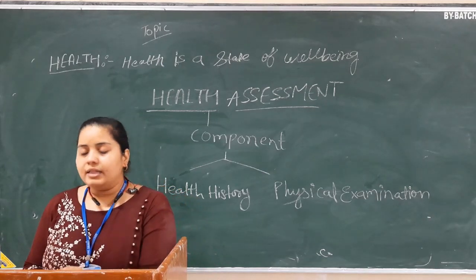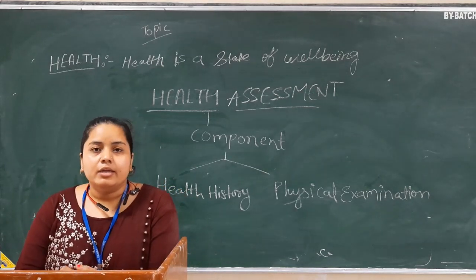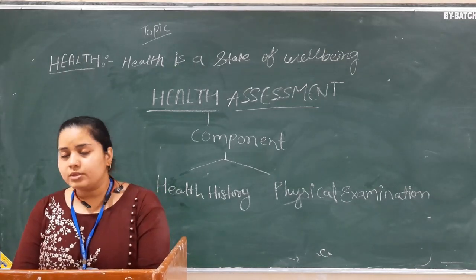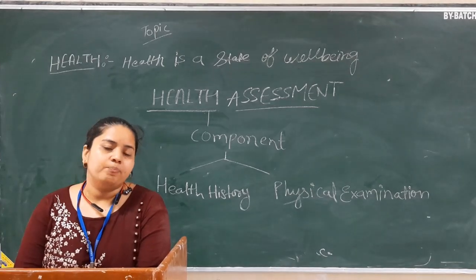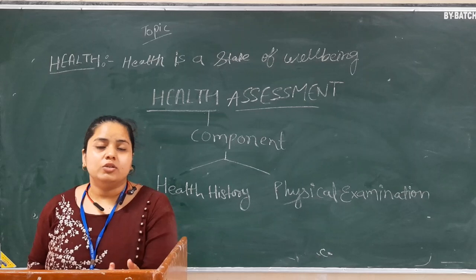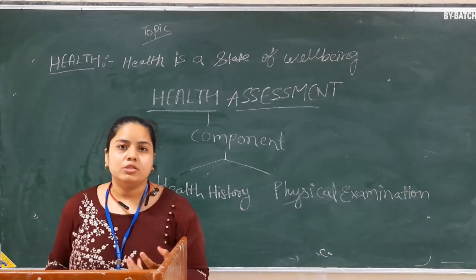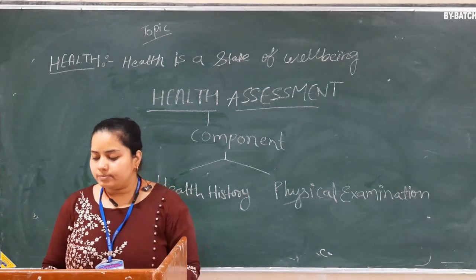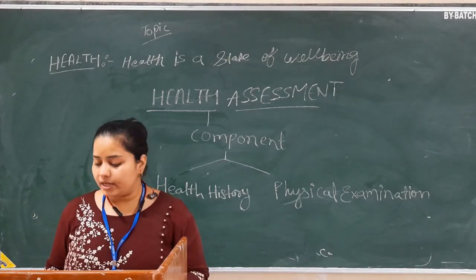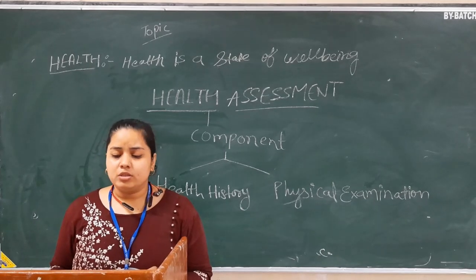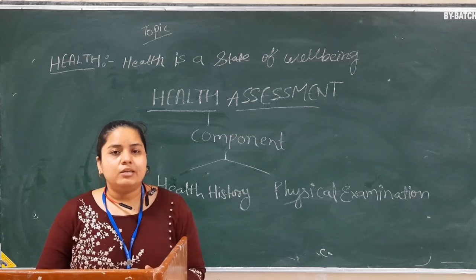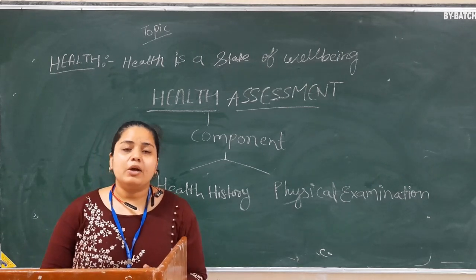The format of health history begins with biographical data. Biographical data includes: age, gender, name, bed number, ward, medical diagnosis or history, and education or family-related information. We collect all of this biographical data first.